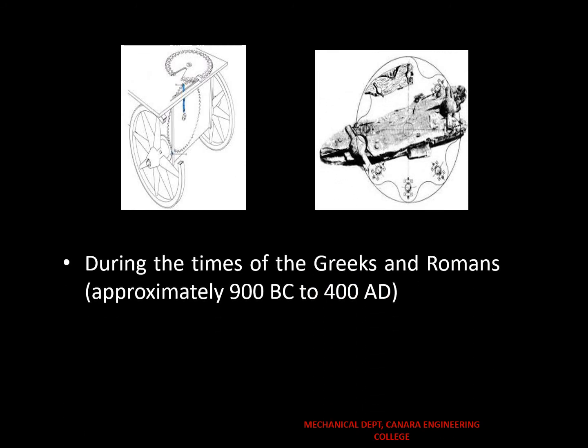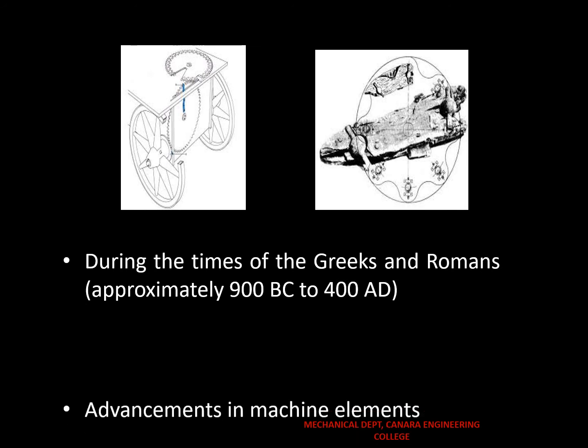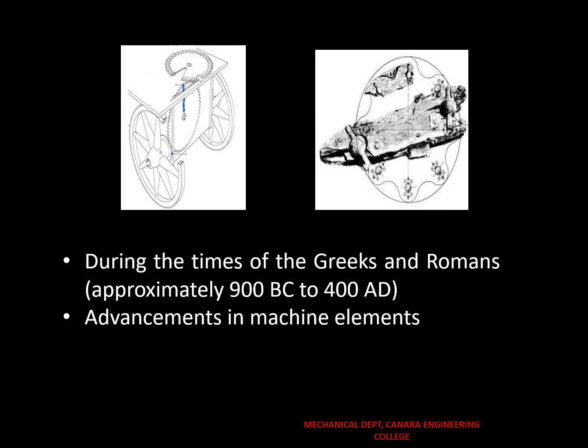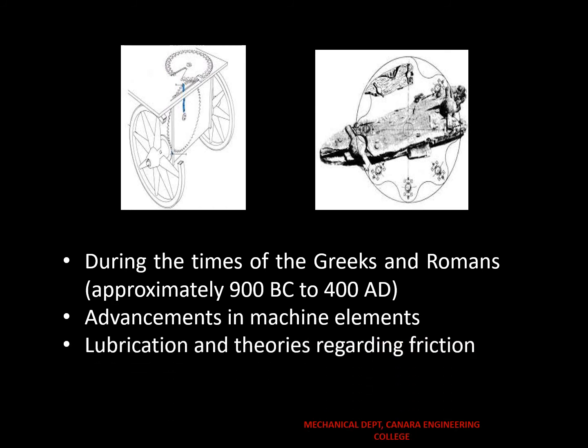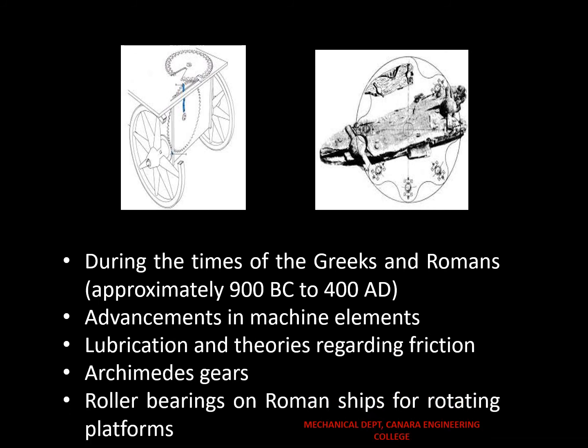During the times of Greeks and Romans, approximately 900 BC to 400 AD, advancements in machine elements, lubrication, and theories regarding friction and wear were found. These advancements included Archimedes' gear and roller bearings on Roman ships for rotating platforms.